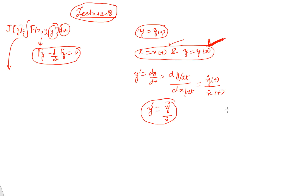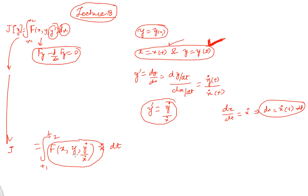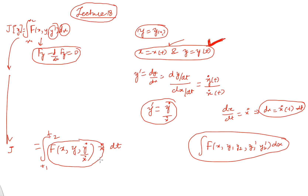We have y' = ẏ/ẋ as one relation, and dx/dt = ẋ, therefore dx = ẋ dt. So the functional turns out to be J = ∫f(x, y, ẏ/ẋ)·ẋ dt from t₁ to t₂. We had this from x₁ to x₂ before. This is our new J. We can see this is a function of x and y where both x and y depend on t, comparable to a functional of the form ∫f(x, y₁, y₂, y₁', y₂') dx. We call the integrand g(t, x, y, ẋ, ẏ) where g = f(x, y, ẏ/ẋ)·ẋ.